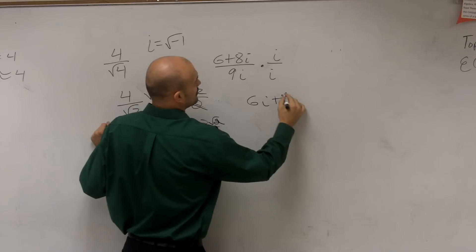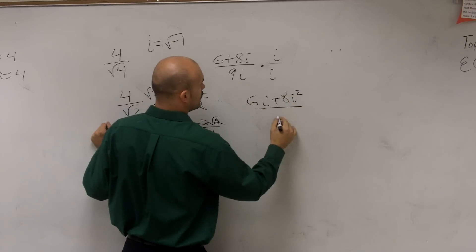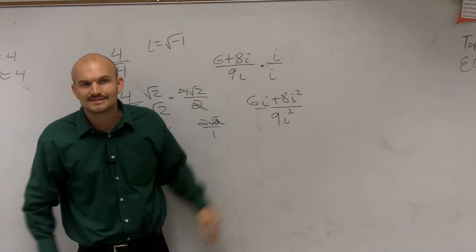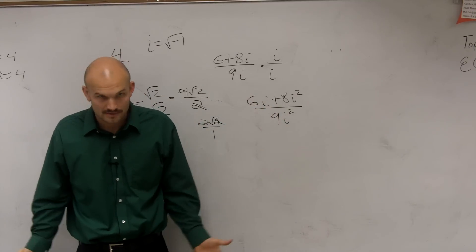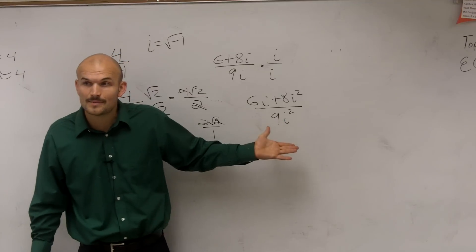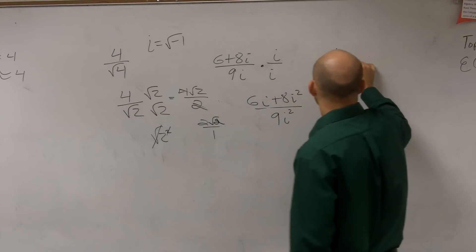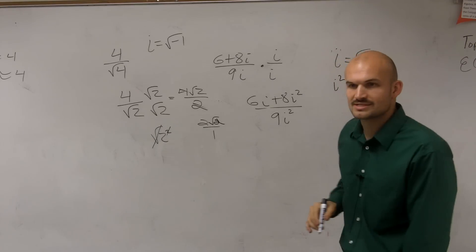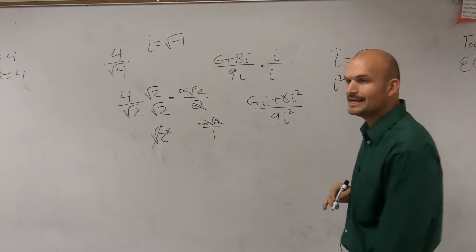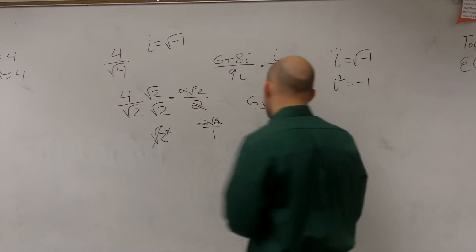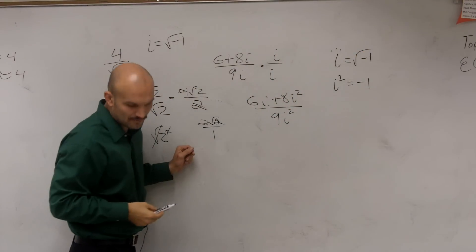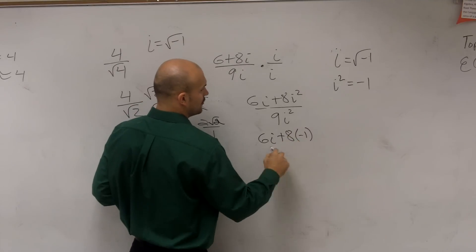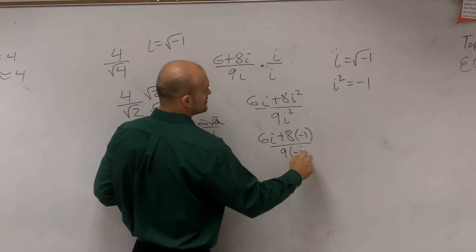When I multiply by i on top, I get 6i plus 8i squared over 9i squared. So you could say, Mr. McLogan, we still have i on the denominator, right? Right now, I still have i on the denominator. However, if you guys remember talking about i represented square root of negative 1, when we kept on going through the system, we said i squared equals negative 1. So that means I can now replace negative 1 for all my i squareds. So I have 6i plus 8 times negative 1 divided by 9 times negative 1.